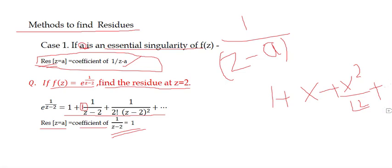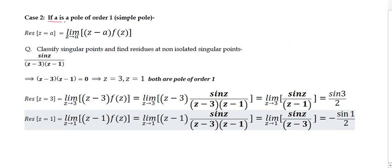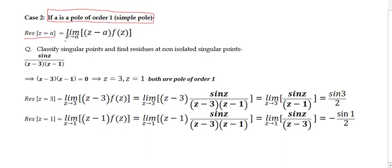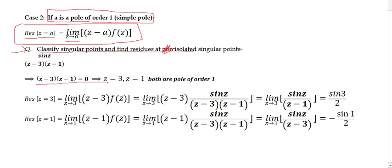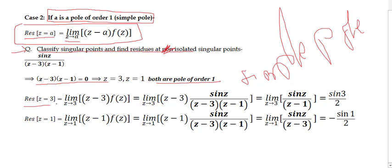Case 2: if 'a' is a pole of order one (simple pole), the residue at z equal to 'a' is given by the formula: limit as z tends to 'a' of (z−a)·f(z). For example, classify singular points and find residues for f(z) = sin(z) / ((z−3)(z−1)). Setting the denominator to zero, poles are z = 3 and z = 1, both simple poles.